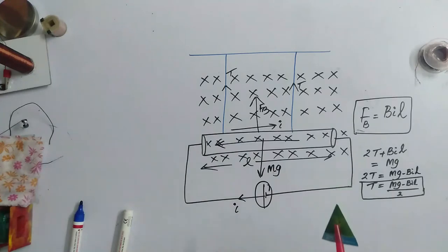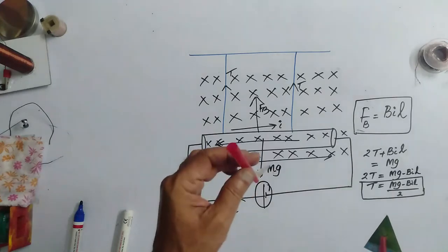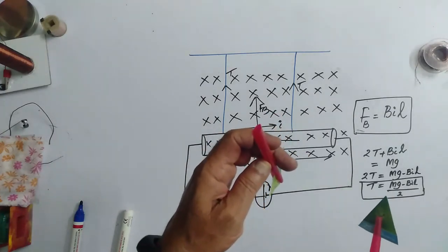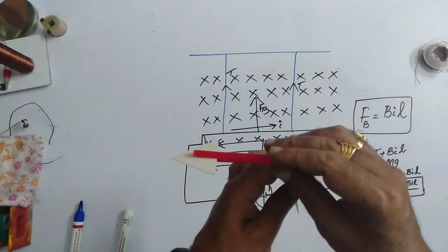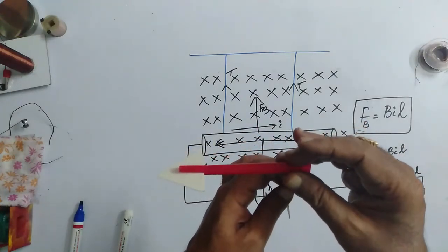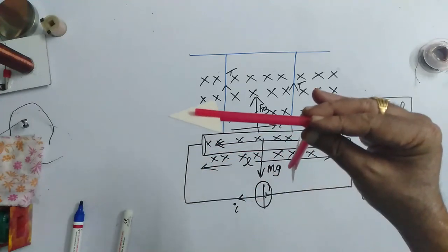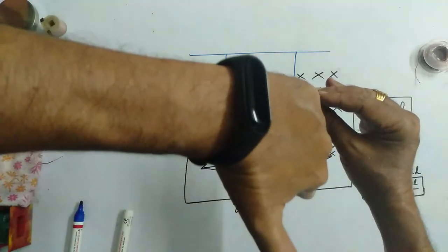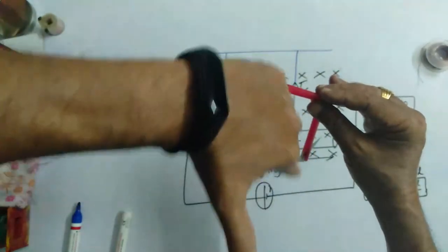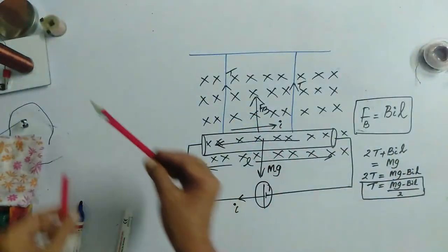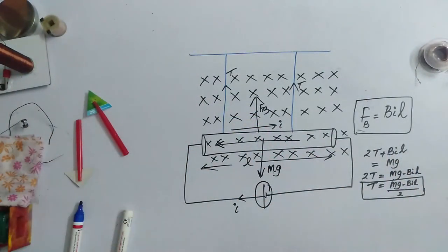So, here magnetic field is into the board and then current is in this direction. So, the thumb gives me towards me. The thumb tells me that the force is acting towards me.